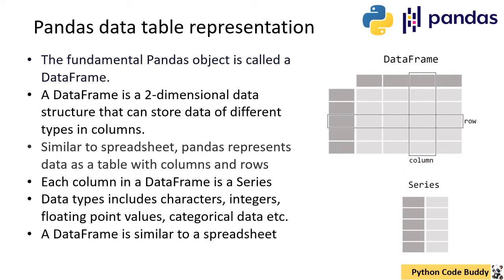Now we come to the fundamental Pandas object, which is called a DataFrame. A DataFrame is a two-dimensional data structure that can store data of different types in columns. As you can see here, it has columns and rows and is very similar to a spreadsheet like Excel. Pandas represents data as a table with columns and rows. Each column in a DataFrame is a Series, and this is the index part which is common to all columns. Data types can include characters, integers, floating point values, categorical data, etc.